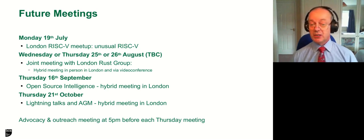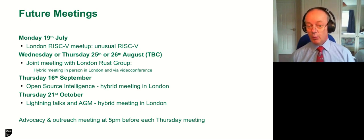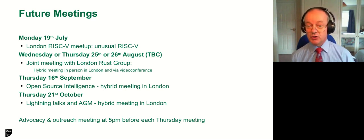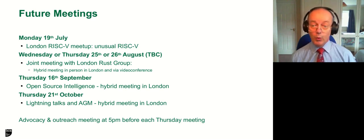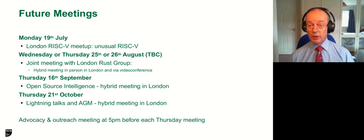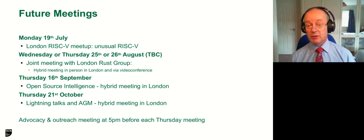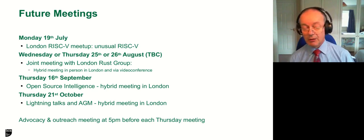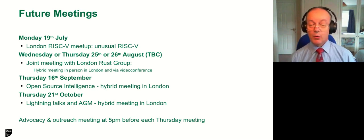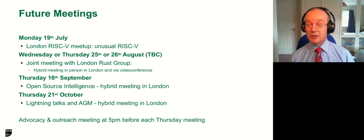Thursday the 16th of September is a very broad look at AI and open source intelligence. We're still working on the programme for that, but I know one of the talks is going to be Will Jones talking about open source discrete dynamic causal modelling, which is a hot technique. Some of you may have seen his recent blog posts on the subject.